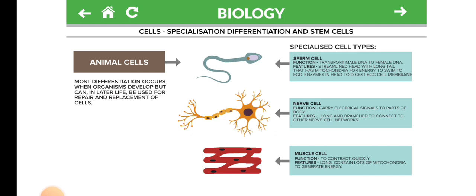Specialized Cell Type: Sperm Cell. Function: transports male DNA to female DNA. Features: streamlined head with long tail that has mitochondria for energy to swim to the egg, and an enzyme in the head to digest the egg cell membrane.